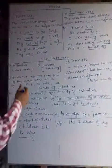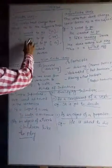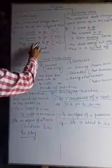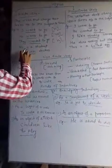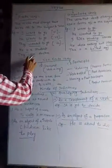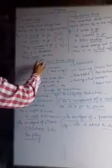So, want, wants, wanted, is, were are finite verbs.